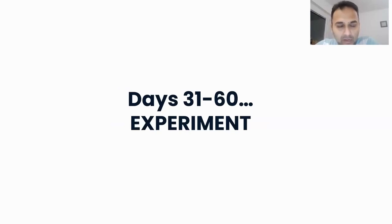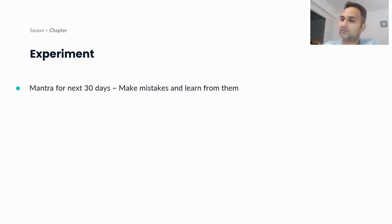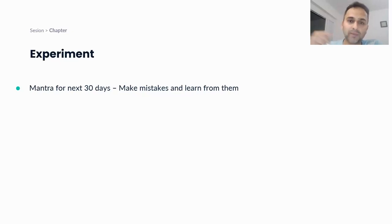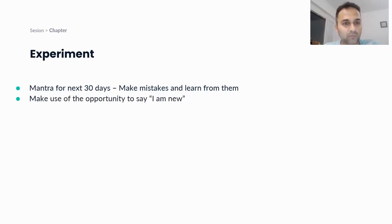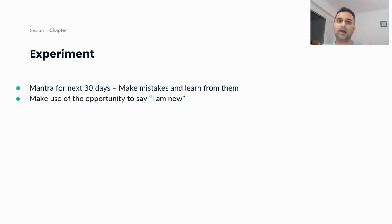The first month is now over. We move into days 31 to 60 — what I call the experiment stage. The mantra for this second month should be: make mistakes and learn from them. This is your license to experiment, and it's also the opportunity to make full use of the 'I'm new' tag. People know you're new to the organization, so small mistakes may be overlooked. Don't be afraid to make mistakes and ask lots of questions.